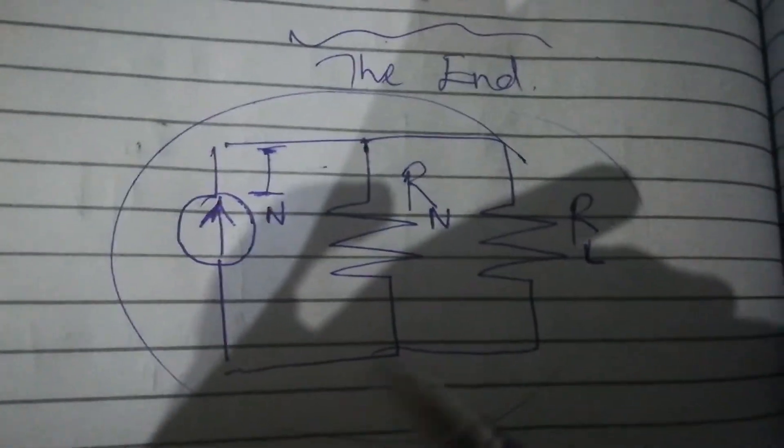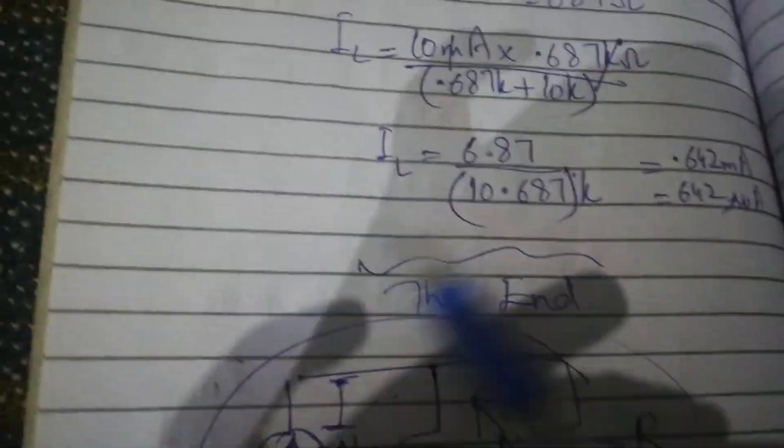Response resistance is the same as Norton current and Norton resistance. Find out Norton current and Norton resistance, then the Norton equivalent circuit. This was our calculation.